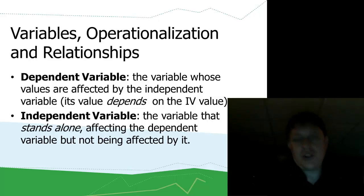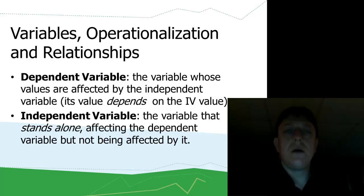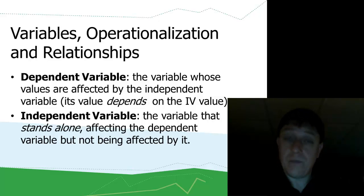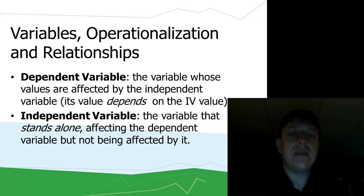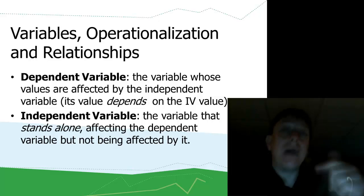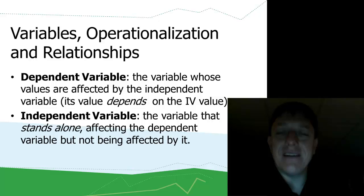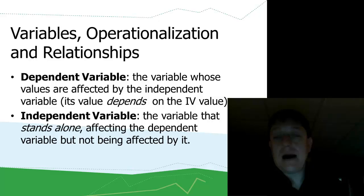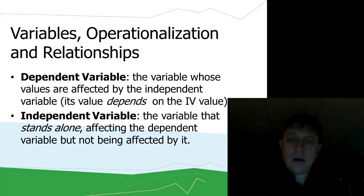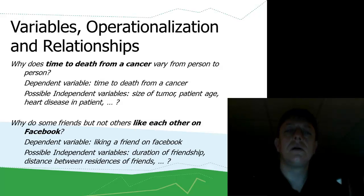When you do research, you'll be looking at two different kinds of variables. The first is the outcome variable — the thing you're interested in explaining, whose values are affected by some other variable. That's called the dependent variable. The dependent variable's value depends on the independent variable. The independent variable stands alone, affecting the dependent variable's value, but not necessarily being affected by it.